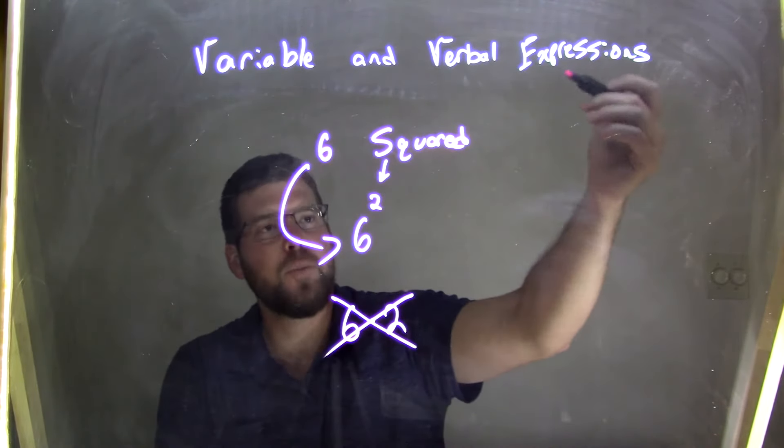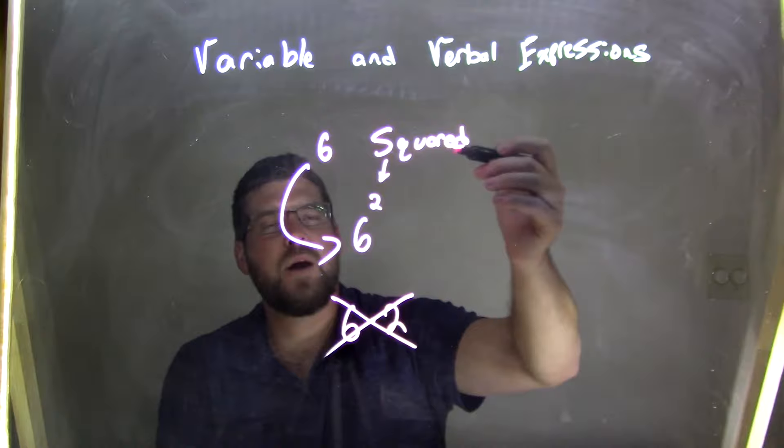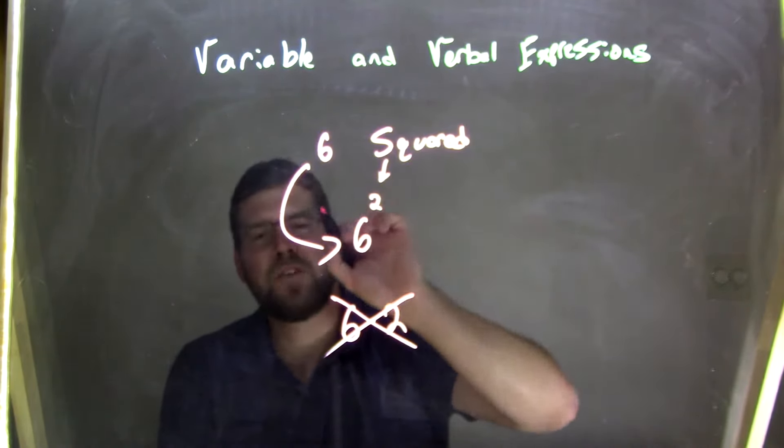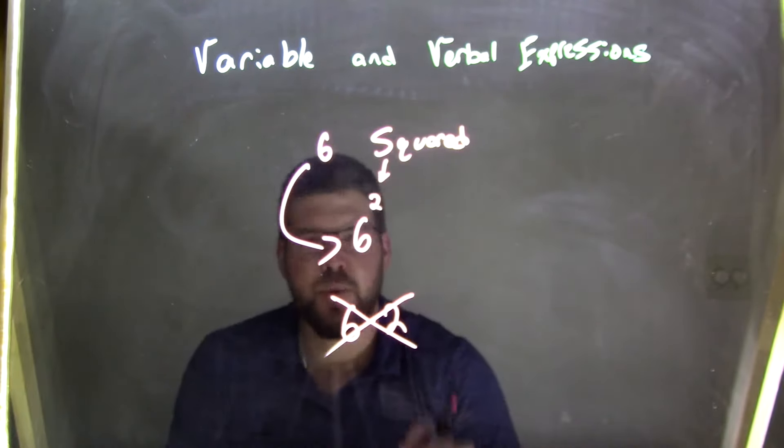So if I take this verbal expression of 6 squared and make it into a variable expression, I take 6 and square it with the 2 up top as the exponent.